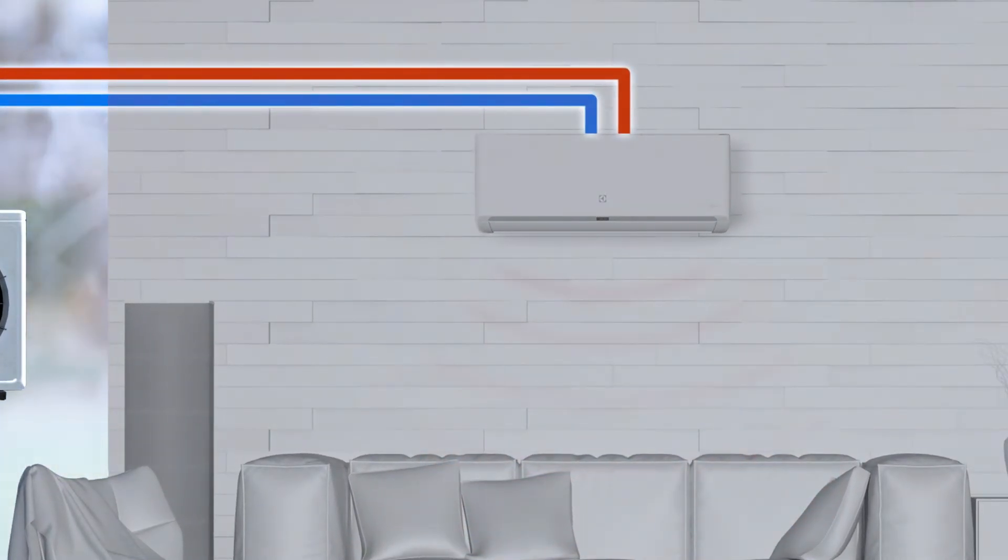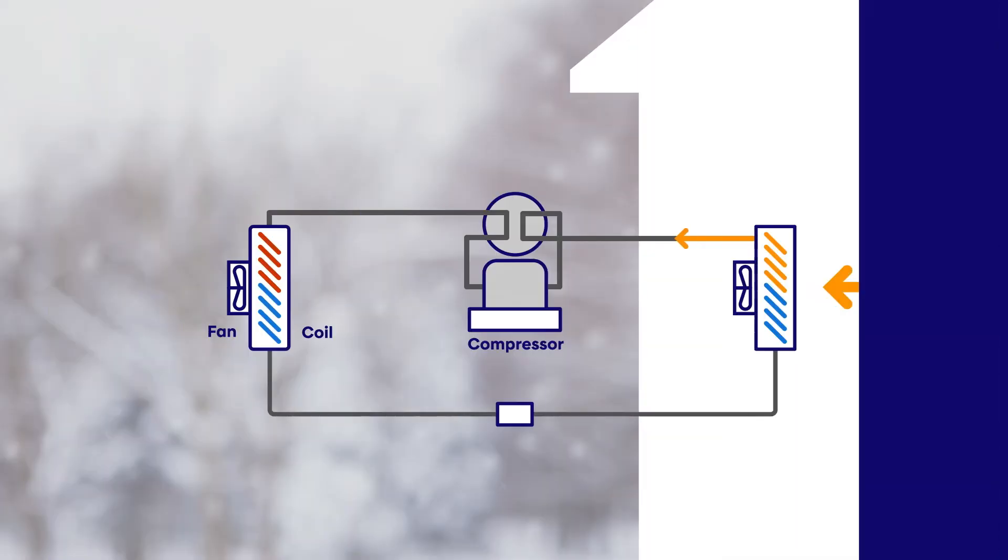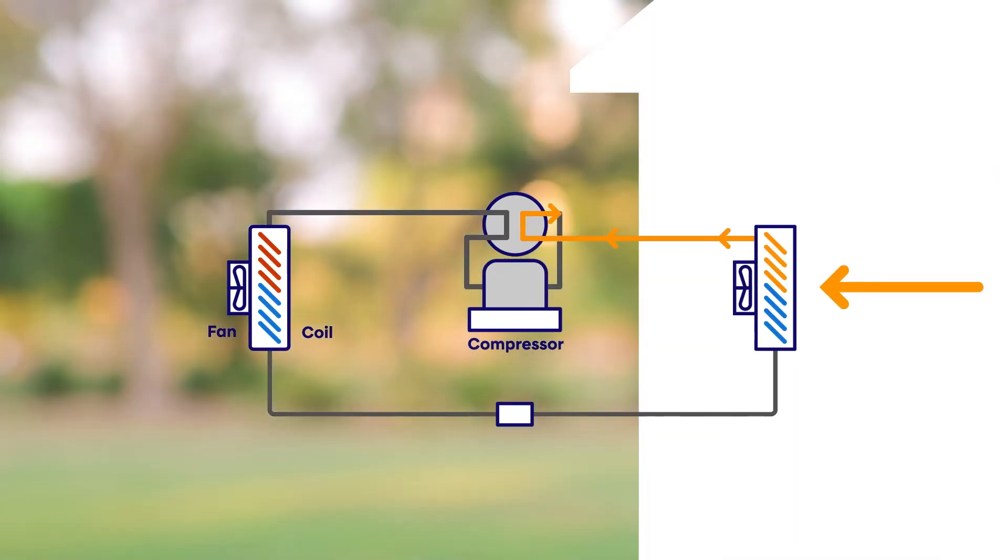A heat pump cycle can also be reversed in order to cool your home. In summer, the refrigerant absorbs heat from the indoor air and discharges it outside. The cooled refrigerant then returns indoors to cool the home once more.